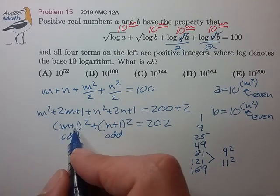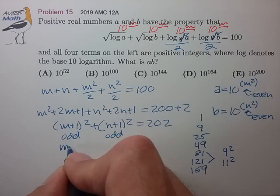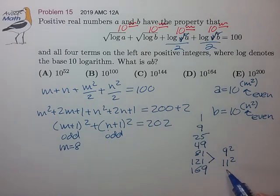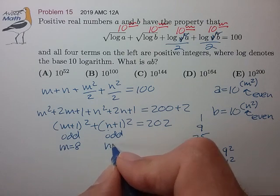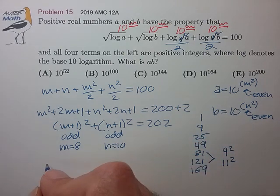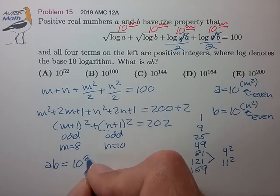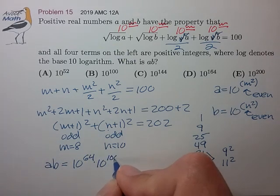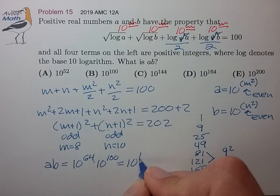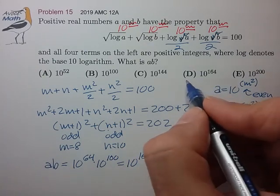So 9 is equal to m plus 1, m is equal to 8. n plus 1 is equal to 11, n is equal to 10. So ab is equal to 10 to the 64 times 10 to the 100 for choice D.